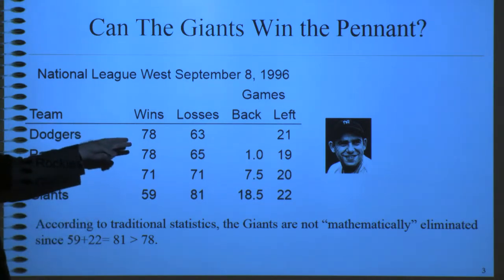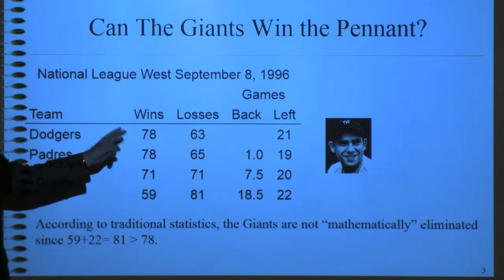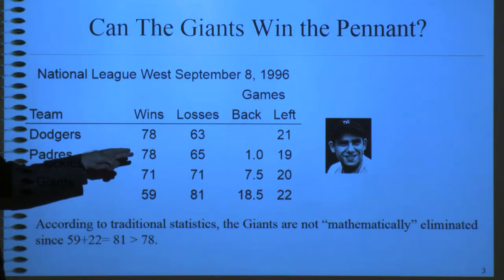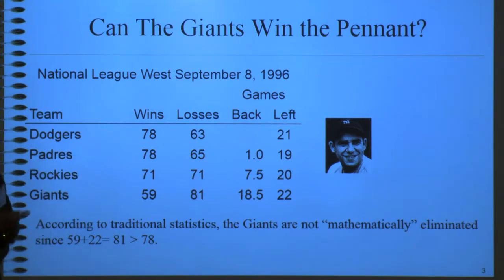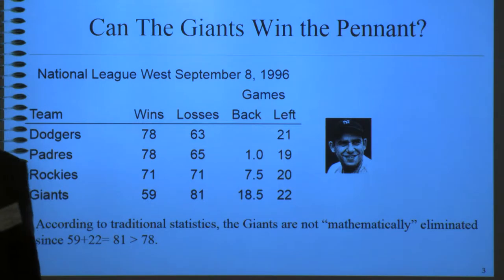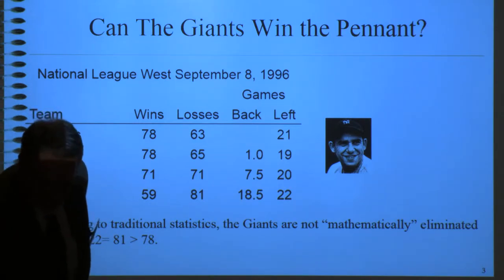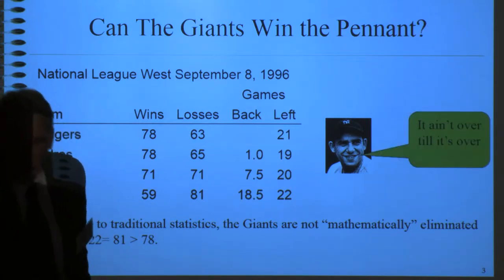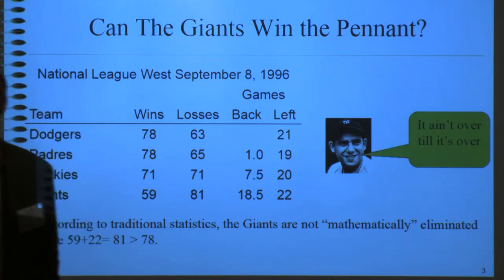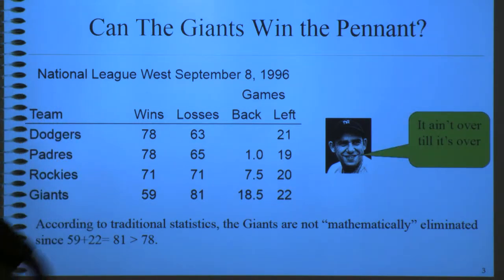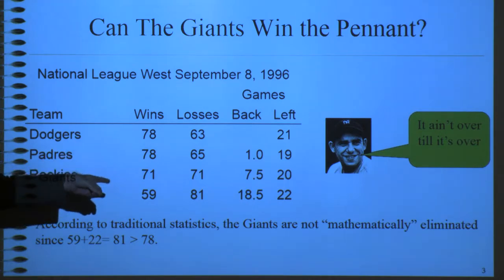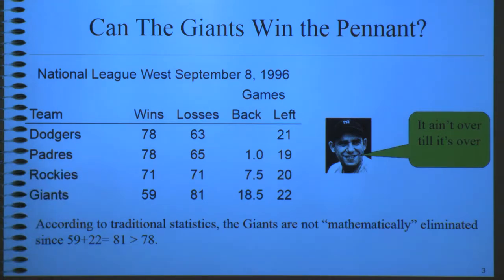Quick quiz — anybody recognize this fellow? Yogi Berra. So Yogi is famous for many pearls of wisdom, particularly this one: 'It ain't over till it's over.' That's sort of the thinking here. He's also said things like, 'When you get to the fork in the road, take it,' and 'Nobody goes there anymore, it's too crowded.'